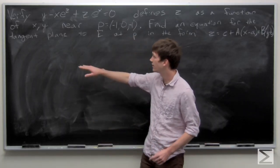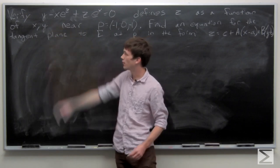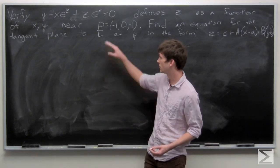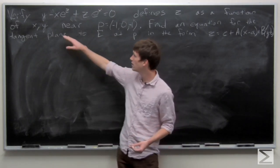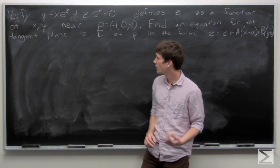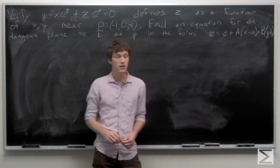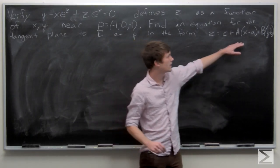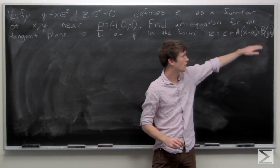In this problem we're asked to verify that the level surface E defined by y minus x·e^z plus z·e^x equals 0 defines z as a function of x and y near the point p equals (-1, 0, -1). We're then asked to find a tangent plane to E at point p in the form z equals c plus a·(x minus a) plus b·(y minus b).